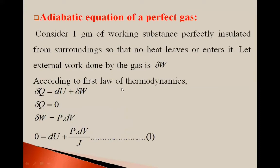Now we will see the adiabatic equation of a perfect gas. Consider one gram of working substance perfectly insulated from surrounding so that no heat leaves or enters the system. Let external work done by the gas be del W. According to the first law of thermodynamics, del Q is equal to du plus del W, where del Q is a small amount of heat supplied to the system, du is change in internal energy, and del W is work done. In case of adiabatic process, no heat leaves or enters the system, so del Q is zero.